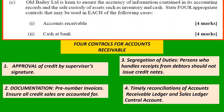Fourth: timely reconciliation of the accounts receivable ledger and sales ledger control account. The accounts receivable ledger tells you how much each debtor owes, and these must be tied in with the sales ledger control account, which is the total of all accounts receivable.